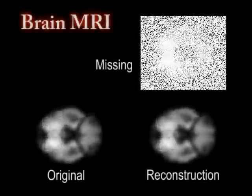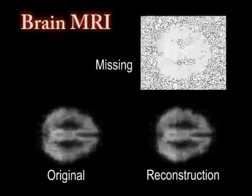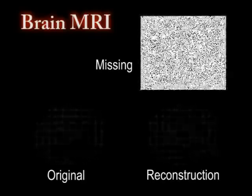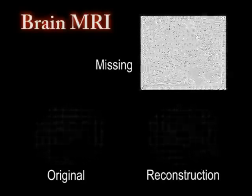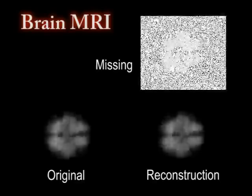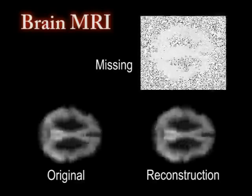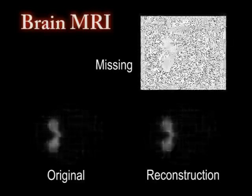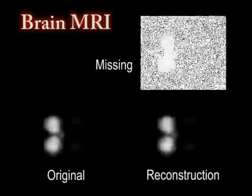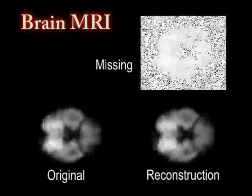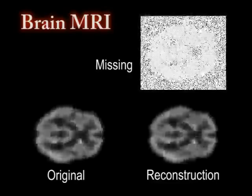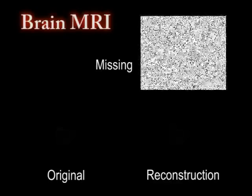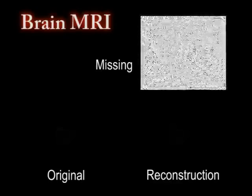Here we use LRTC to complete an MRI dataset. This is a 3-mode tensor. We randomly remove 80% of the entries. Because the MRI data is of low rank, the reconstruction is nearly perfect.